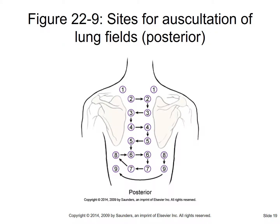For the posterior lung assessment, you follow a similar pattern going down the back. Note that the points are positioned around the scapula - the shoulder blade - because you can't hear well through that large bone.